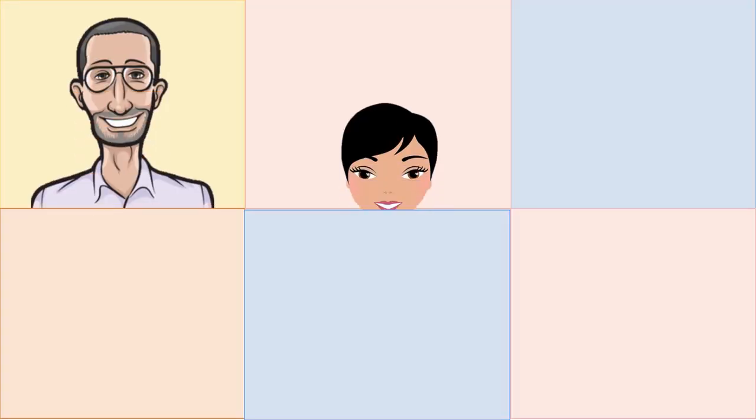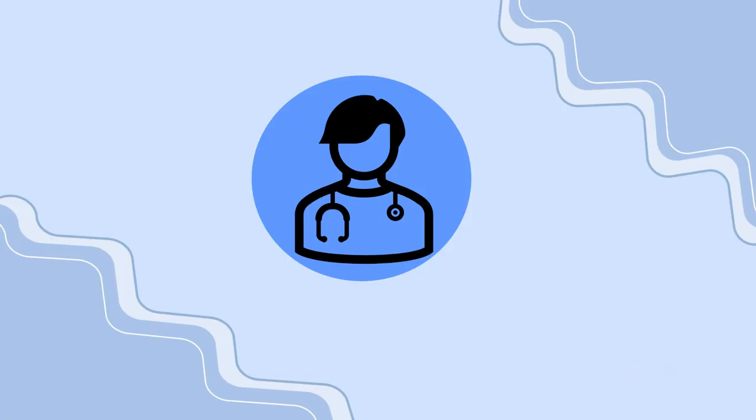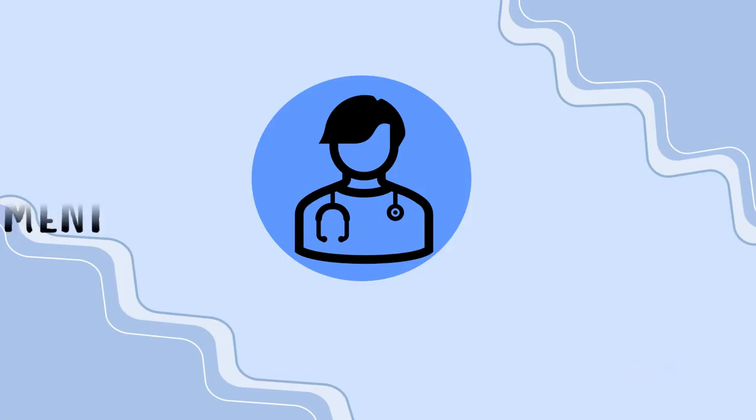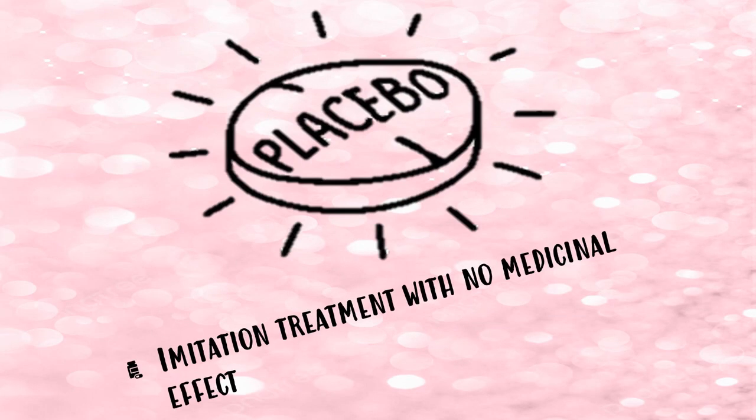In some trials, participants are divided into different treatment groups in a random order. This allows doctors to assess how their study treatment compares to existing treatment options. Or in certain trials, a placebo, which is an imitation treatment with no medicinal effect.